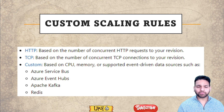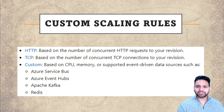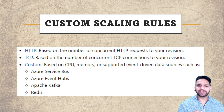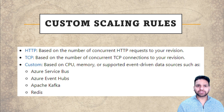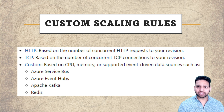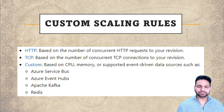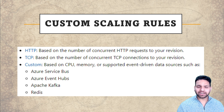The third option, which is the most important one, is the custom scaling rule. These are based on CPU, memory, and event-driven data sources. CPU and memory are straightforward — you define the CPU usage as well as the memory usage. However, for event-driven data sources, scaling happens based on different events. It can be from Azure Service Bus, Azure Event Hub, Apache Kafka, or Redis. These are just examples — there are around 70 data sources.